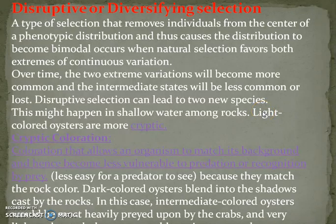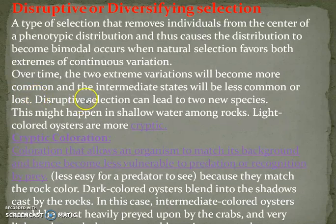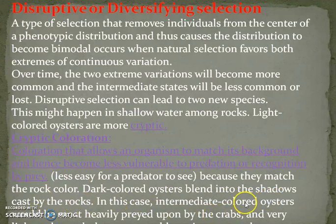Disruptive selection removes individuals from the centre of the phenotypic distribution, causing the distribution to become bimodal. It occurs when natural selection favours both extremes of continuous variation. Over time the two extreme variations become more common and the intermediate state becomes less common or lost. Disruptive selection can lead to two new species. For example, in shallow water among rocks, light-coloured oysters are more cryptic and less easy for a predator to see because they match rock colour, while dark-coloured oysters blend into shadows. Intermediate-coloured oysters would be most heavily preyed upon.